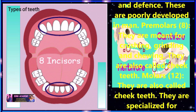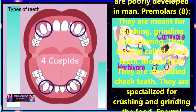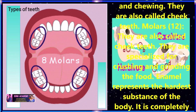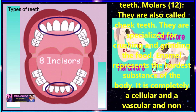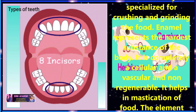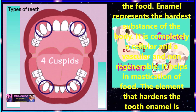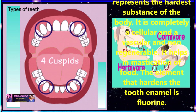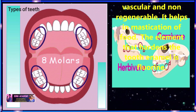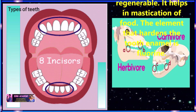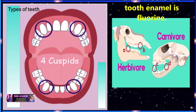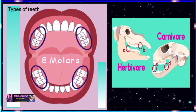Now let us discuss 8 premolars and their function. They are meant for crushing, grinding, and chewing. They are also called cheek teeth. Let us discuss 12 molars which are present in humans — cheek teeth specialized for crushing and grinding the food. The enamel which is present on the teeth represents the hardest substance of the body. It is completely acellular, avascular, and non-regenerable. It helps in mastication of the food. The element that hardens the smooth enamel is fluorine.